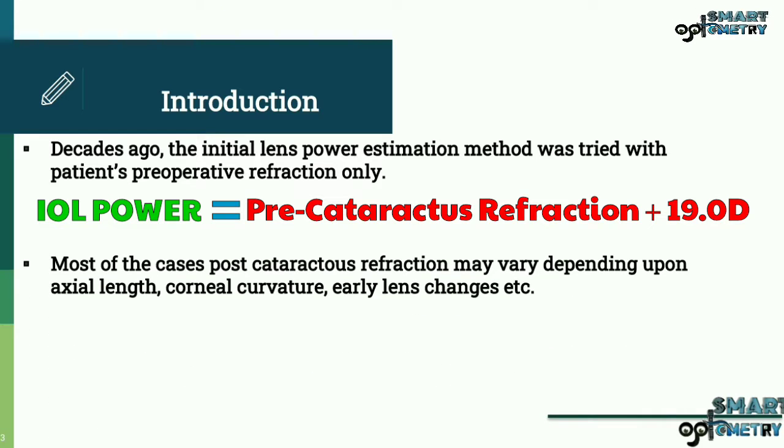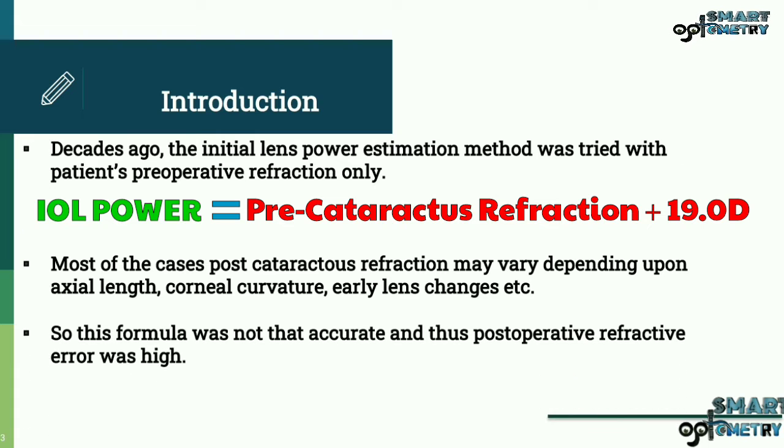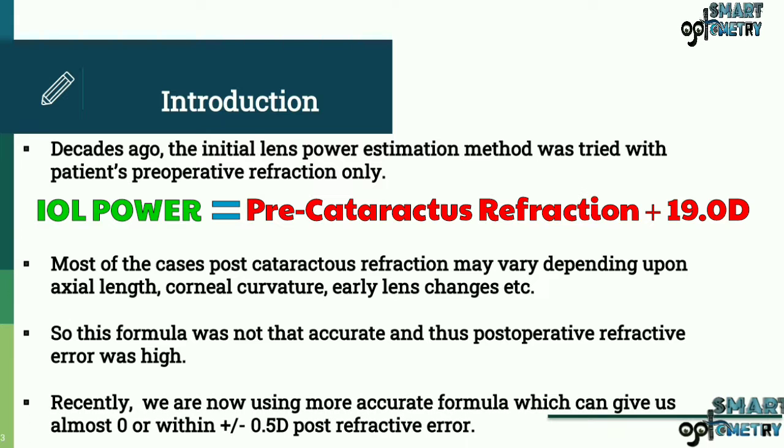But most of the cases post-cataractus refraction may vary depending upon axial length, corneal curvature, early lens changes, etc. And most patients don't know their pre-cataractus refraction. So this formula was not that accurate and thus postoperative refractive error was high. Recently we are using more accurate formulas which can give us almost zero or within plus minus 0.5 diopter postoperative error.